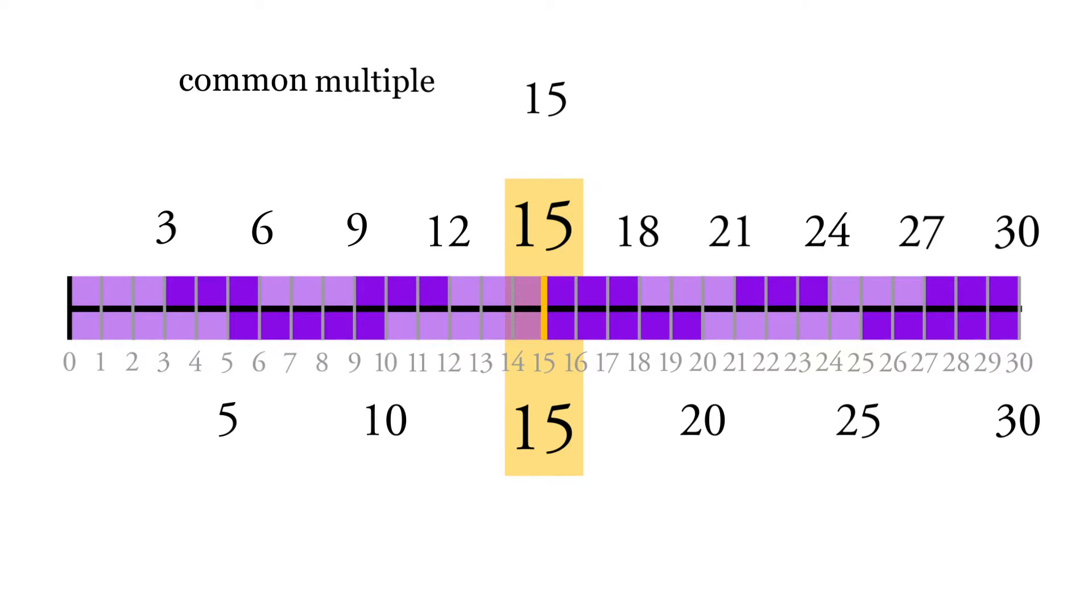3 times 5 will always be a common multiple. If you take the two numbers and you just straight up multiply them, you'll get a common multiple. And in this case, it's also the least common multiple, but it's not always.